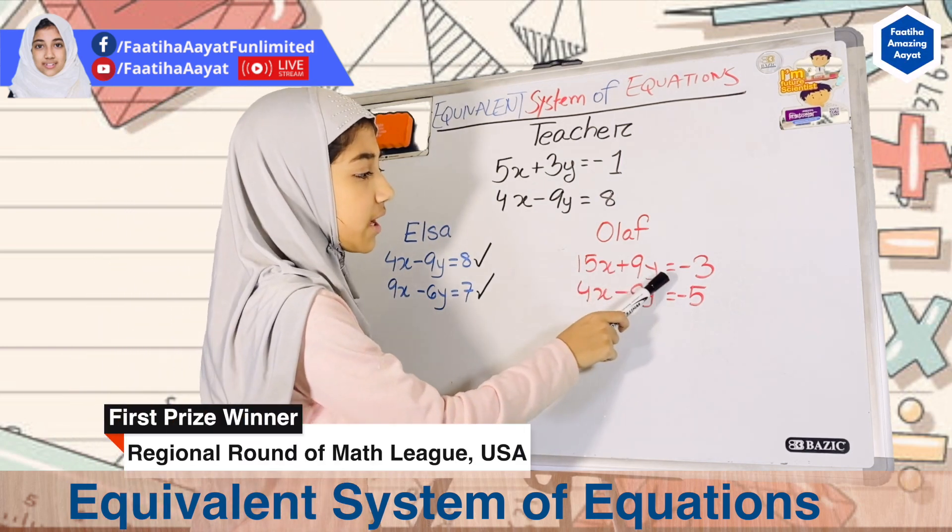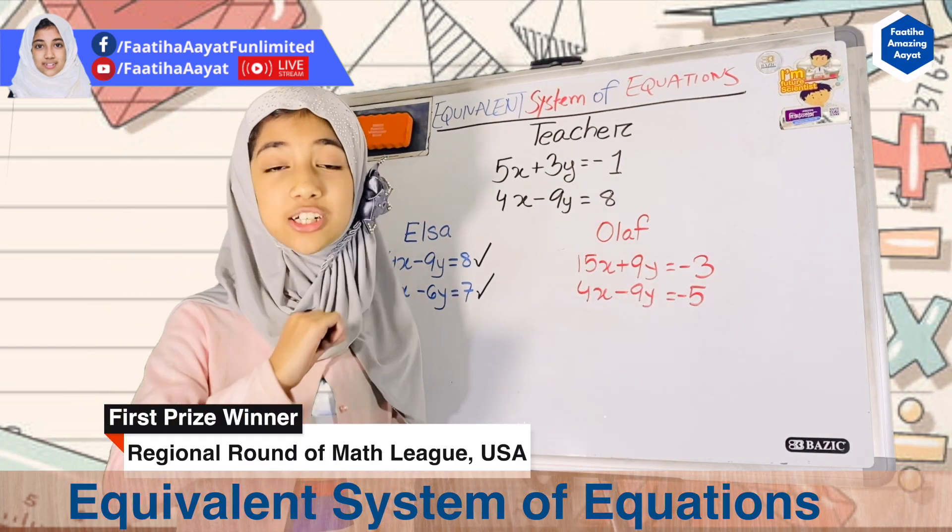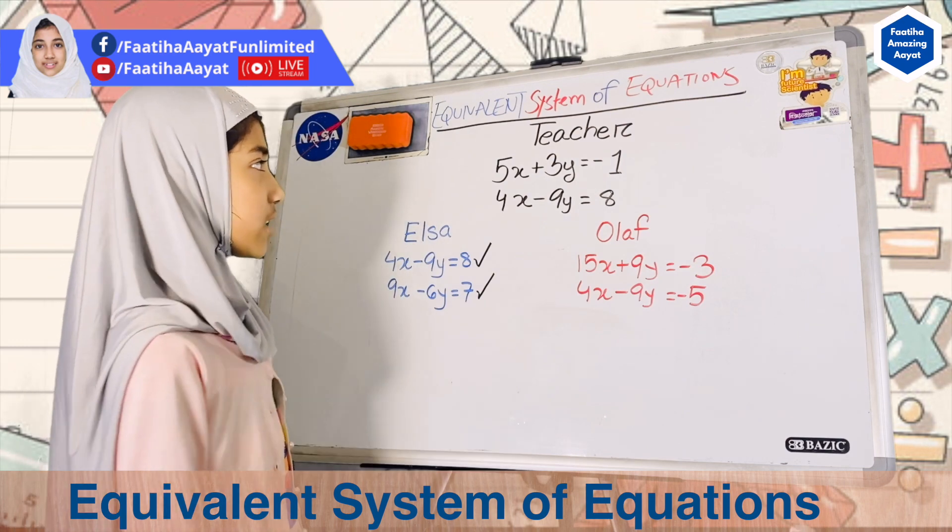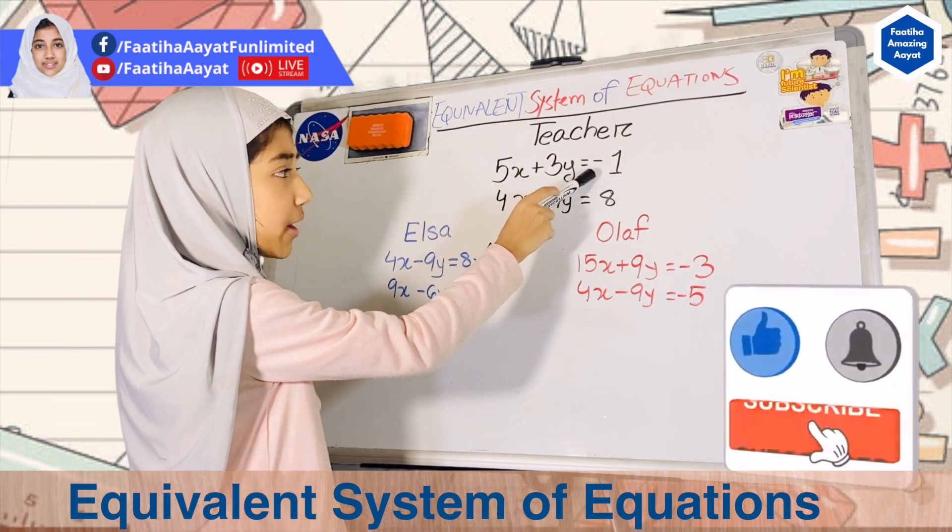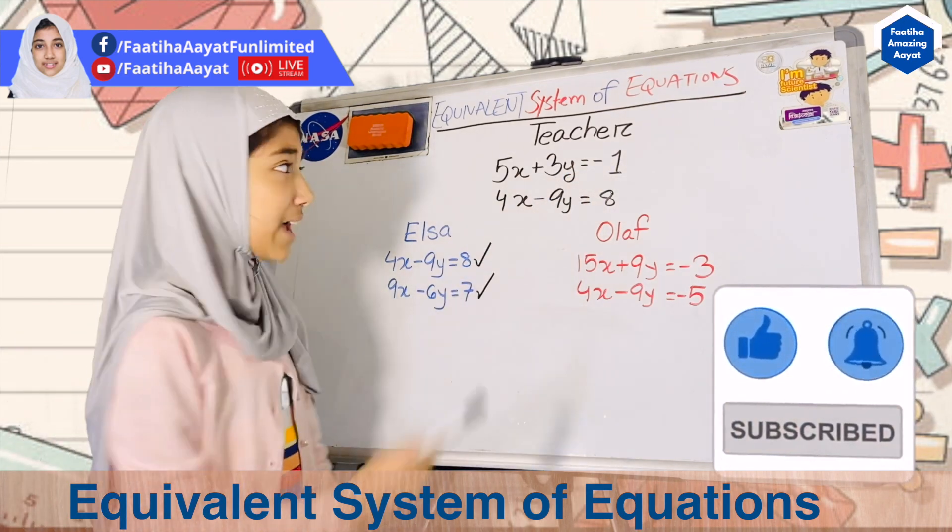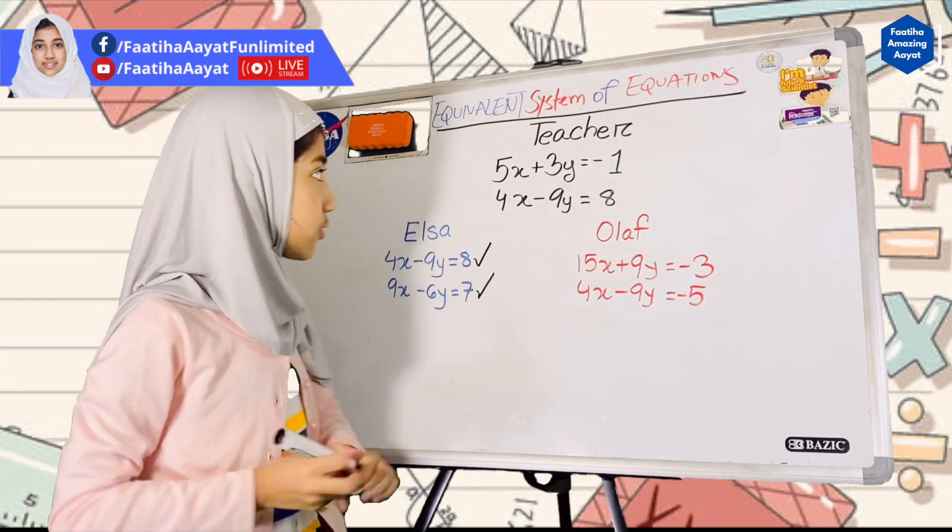He says that 15x plus 9y equals minus 3. I actually think that's correct because he took this entire equation, 5x plus 3y equals minus 1, and he multiplied each of the variables by 3. Let me show you how.